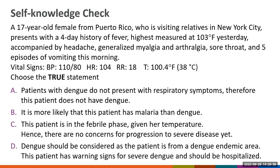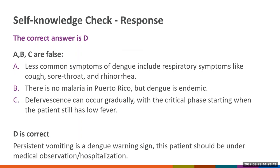The correct answer is D. Less common symptoms of dengue include respiratory symptoms like cough, sore throat, and runny nose — so A is false. There is no malaria in Puerto Rico, but dengue is endemic there — so B is false. Defervescence can occur gradually and the critical phase can start while the patient still has low fever — so C is false. D is correct: persistent vomiting is a dengue warning sign, and this patient should be under medical observation or hospitalized.